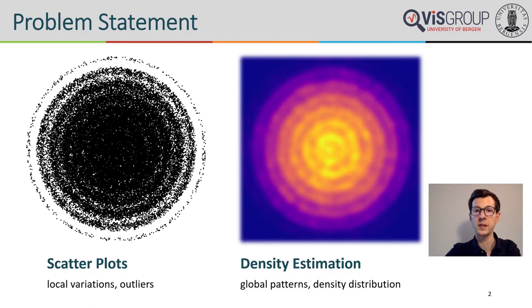On the right side you can see a density-based visualization using a heatmap. They interpret the data points as samples of a continuous phenomenon, for example by using a kernel density estimation. Even if datasets are highly over-plotted, global patterns and density distributions remain visible. But unfortunately they are not well suited to depict individual data points and local variations anymore.